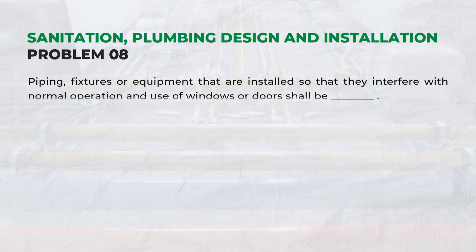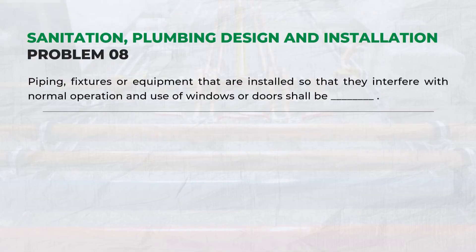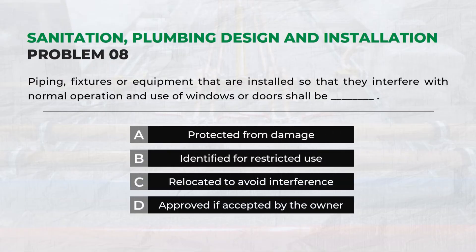Piping, fixtures, or equipment that are installed so that they interfere with normal operation and use of windows or doors shall be: C. Relocated to avoid interference.